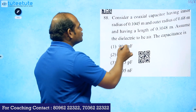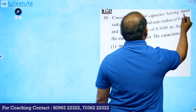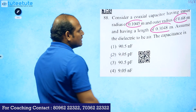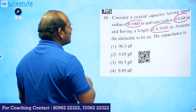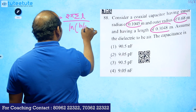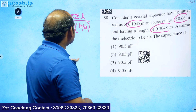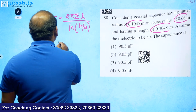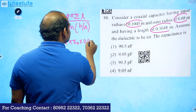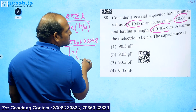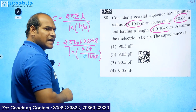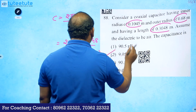The next question is about a coaxial capacitor with inner radius a = 0.1045 m and outer radius b = 0.068 m, length l = 0.3048 m, with air dielectric. Using C = 2πε₀l/ln(b/a) and substituting all values gives the capacitance of 9.05 picofarads.